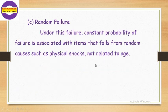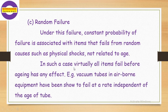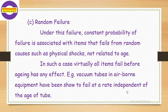Random failure: under this failure, a constant probability of failure is associated with items that fail from random causes such as physical shocks, not related to age. In such cases, virtually all the items fail before aging has any effect. For example, vacuum tubes in airborne equipment have been shown to fail at a rate independent of the age of the tube. This is an example of random failure.